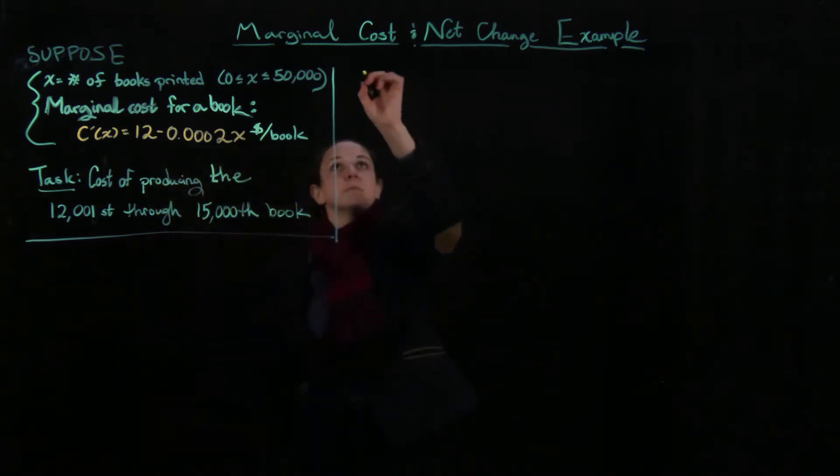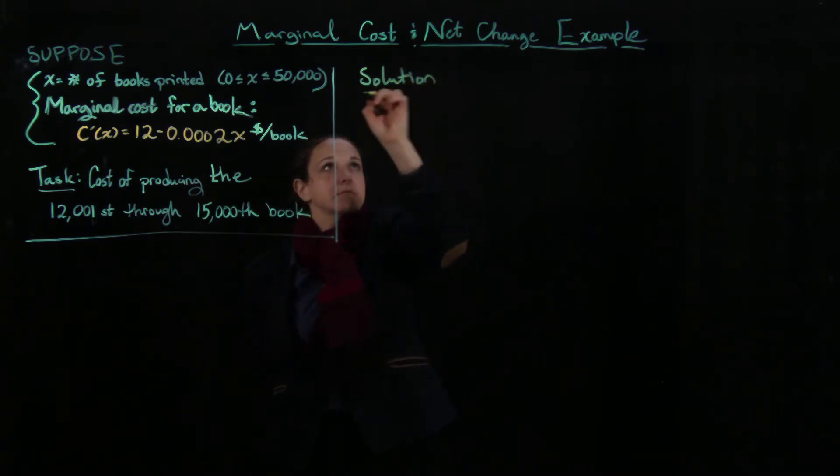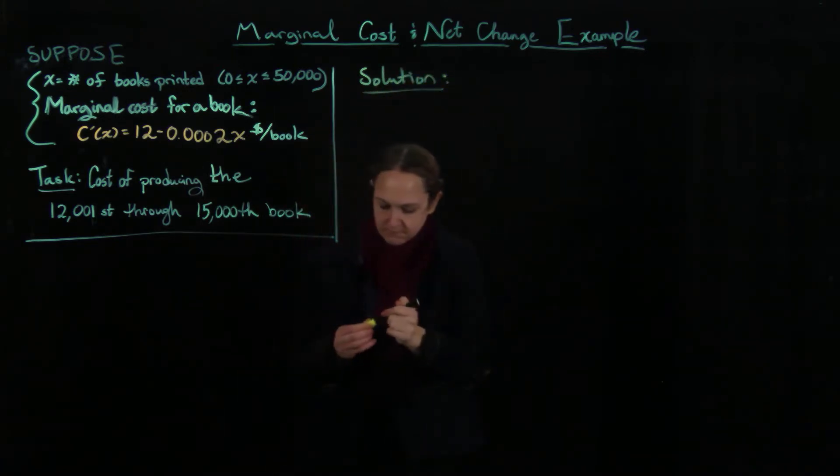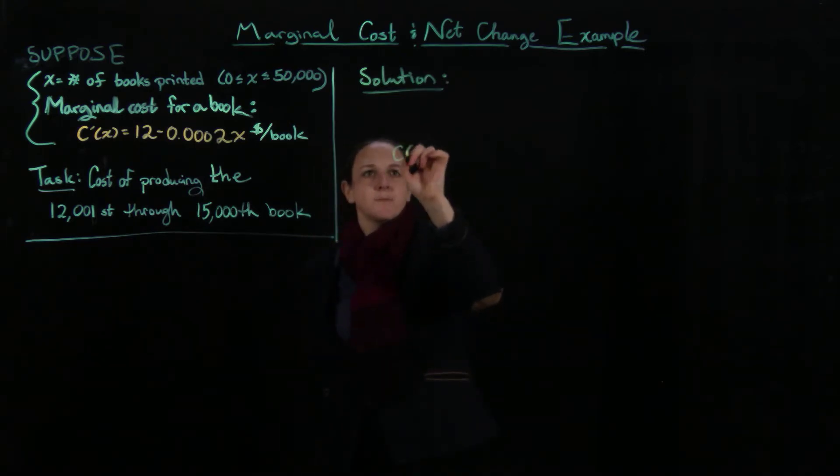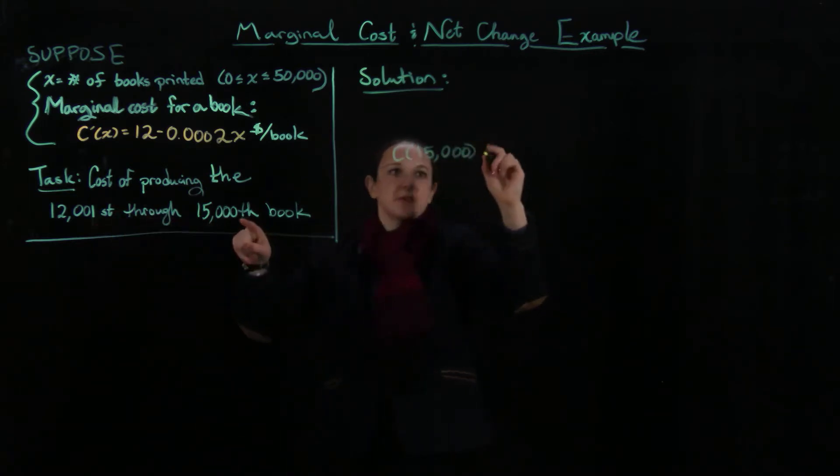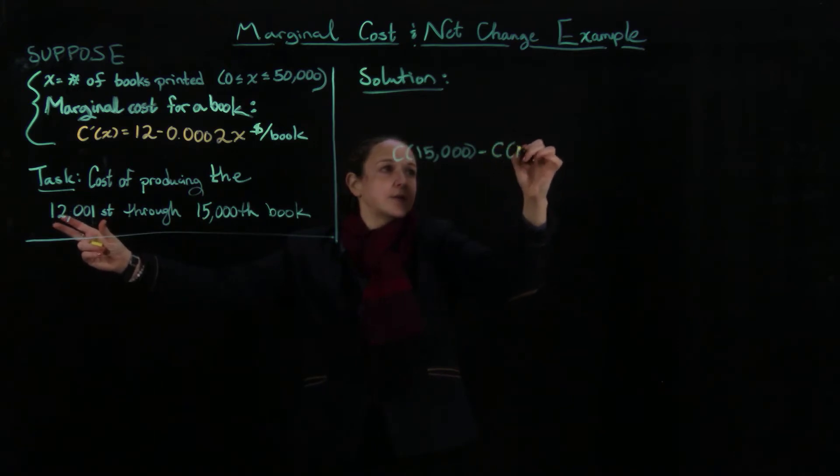Solution. We're going to have C(15,000), the cost of producing all of the first 15,000, subtracted off the cost of producing the first 12,000, because we want to start with the 12,000th first.